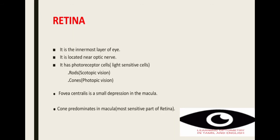Next is the retina. Retina is the innermost layer of the eye, located near the optic nerve. Retina has photoreceptor cells: rods and cones. Rods are responsible for scotopic vision — vision in low illumination. Cones are responsible for photopic vision — vision in high illumination, that is, high intensity of light.